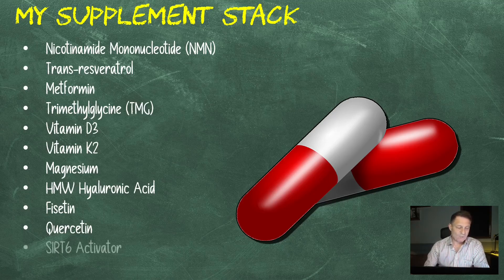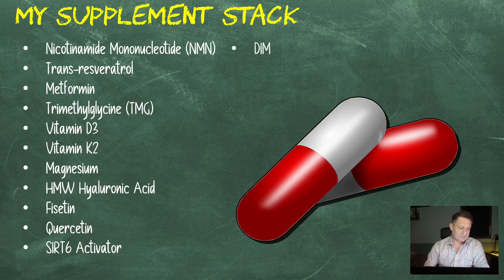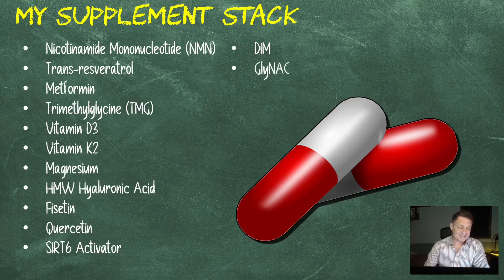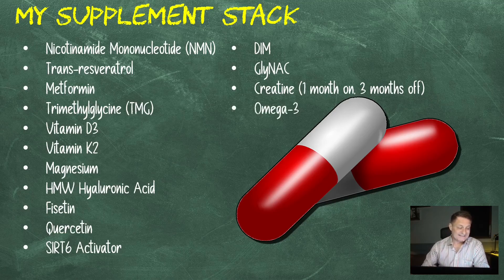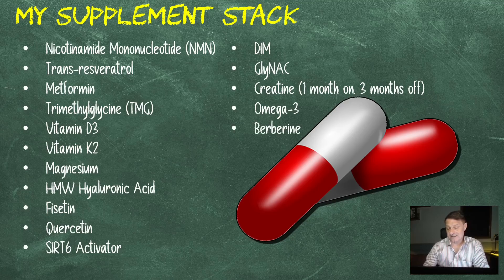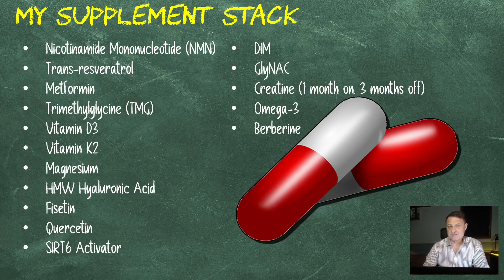Sirt-6 activator, 400 milligrams per day. DIM, 600 milligrams per day. GlyNAC, that's glycine and NAC, N-acetylcysteine, 800 milligrams a day. 5 grams of creatine, that's one month on and then three months off. 800 grams of EPA and 600 grams of DHA. I also take now one gram of berberine that's added to the mix. So that's the supplements I've been taking for the last four months.